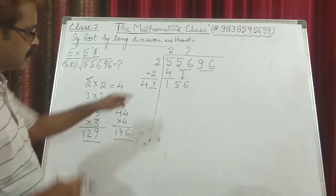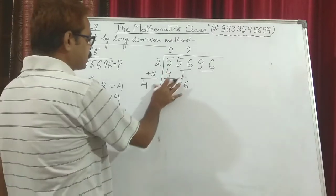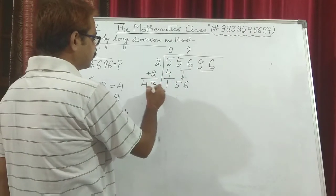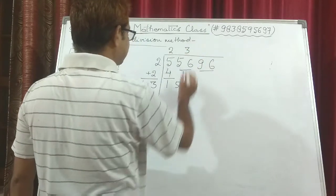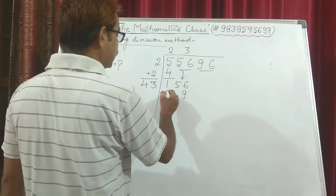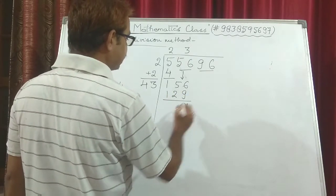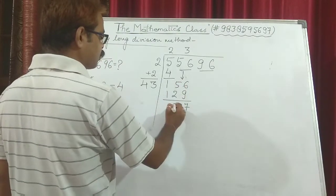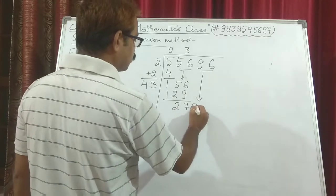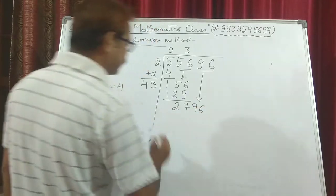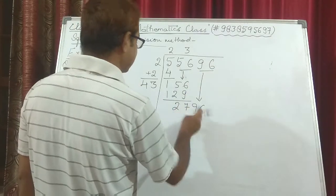We use 3 here and 3 here. 43 times 3: 3 times 3 is 9, 4 times 3 is 12. So 6 minus 9 — we borrow — and the remainder works out to 27. We carry down the whole next pair 96, so the new number becomes 2796. We add this 3 to the current number, giving 46-something.